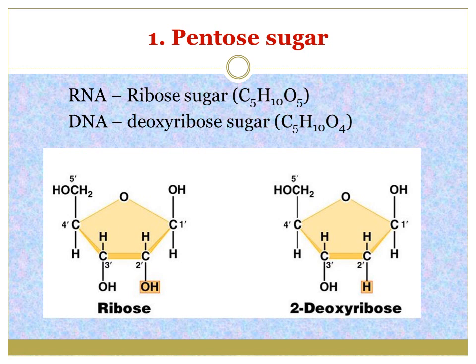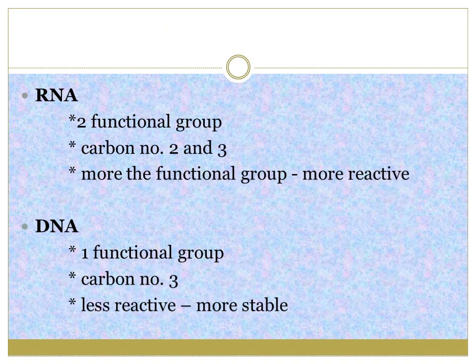You can see that one oxygen is missing in deoxyribose sugar compared to ribose sugar. If one oxygen is removed from the second position of ribose sugar, the name becomes deoxyribose sugar — that is the only difference between ribose and deoxyribose. RNA has two functional groups — the OH group at carbon numbers 2 and 3 — whereas in DNA there is only one functional group at carbon number 3. More functional groups means more reactive, so RNA is more reactive compared to DNA. DNA is more stable in nature.